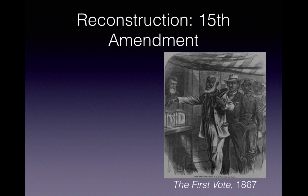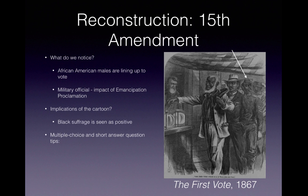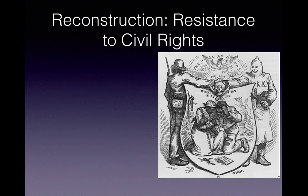The political cartoon 'The First Vote' from 1867 deals with the 15th Amendment. We see African-American males lining up to vote, including a military official — reflecting the impact of the Emancipation Proclamation allowing African Americans to serve in the military. Black suffrage is portrayed positively. For exam tips, know how southern states resisted the 15th Amendment through literacy tests, poll taxes, and grandfather clauses, and how the amendment split the women's rights movement.